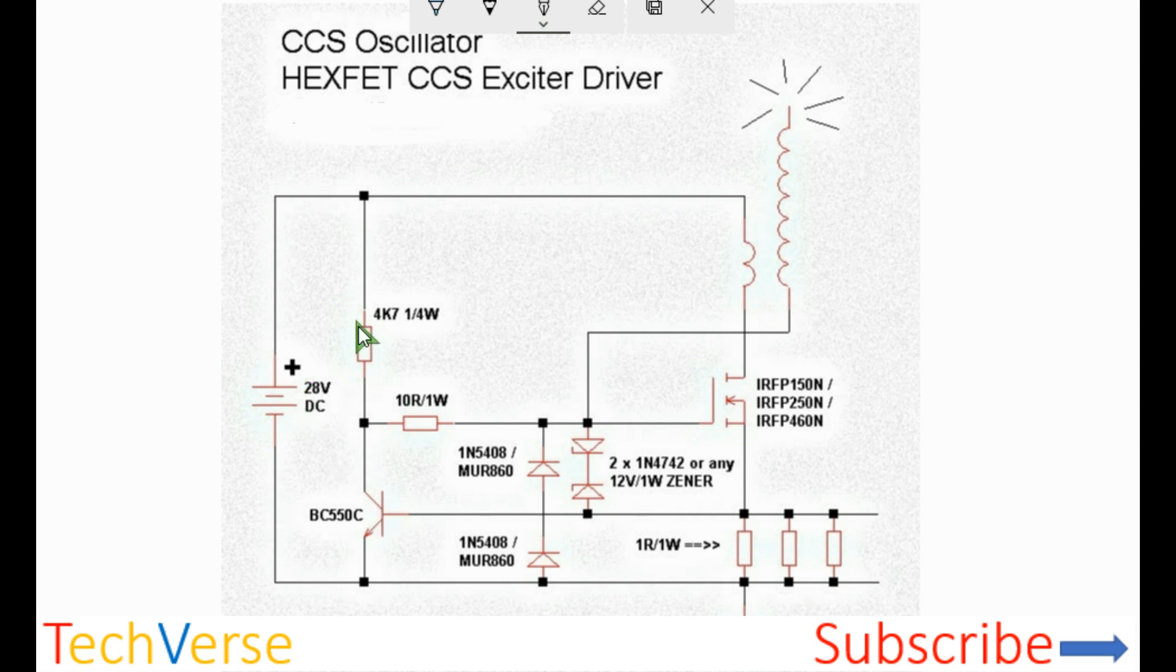Initially the MOSFET will conduct since voltage will find its way to the gate. Zener diodes protect the gate of the MOSFET from excess voltage. Current will flow through the primary winding of the Tesla coil, through the MOSFET, through the current sense resistance to ground.